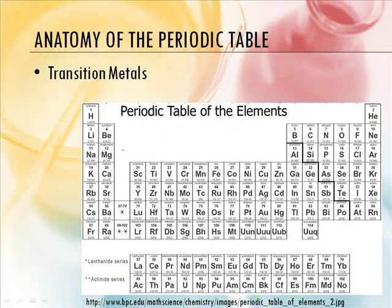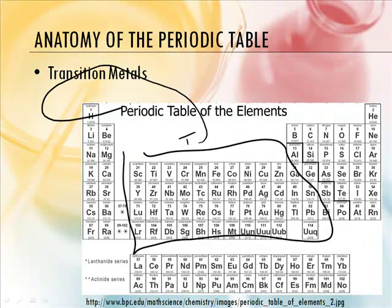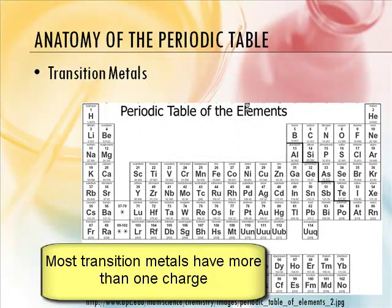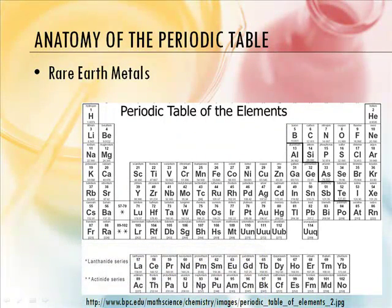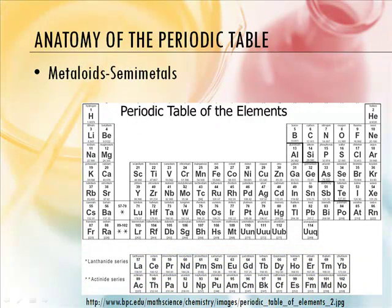Transition metals — there are no set charges here. The transition metals are essentially the metals in the middle of the periodic table. Some elements even have multiple charges — like iron can have plus two or plus three charges. I actually call them the schizophrenic metals because they don't know which way to go. Rare earth metals are the ones in the bottom rows — they are found rarely in the earth and are sometimes called inner transition metals. And metals and semi-metals are the ones along the stair step. The most classic one everybody knows is silicon.